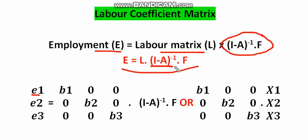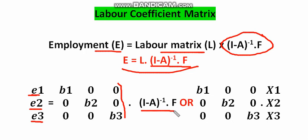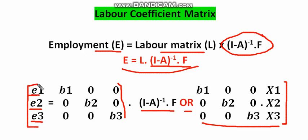The gross sectoral outputs are x1, x2, and x3 — corresponding to primary, secondary, and tertiary sectors. So e1 is the total labor employed in sector one (primary), e2 in sector two (industrial), and e3 in sector three (services). You simply multiply the labor coefficient matrix by the gross sectoral outputs (I-A)⁻¹·f to get the total number of laborers employed in each sector.